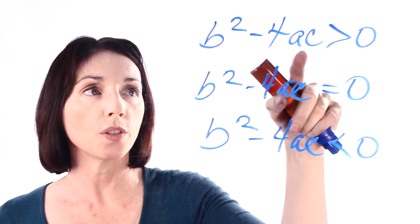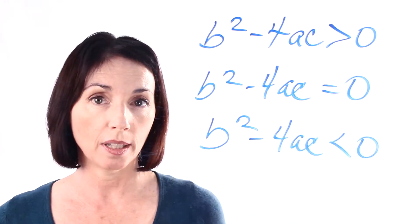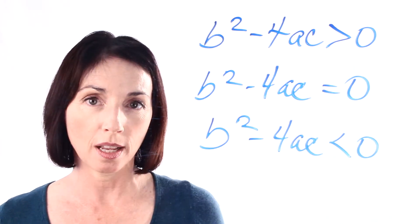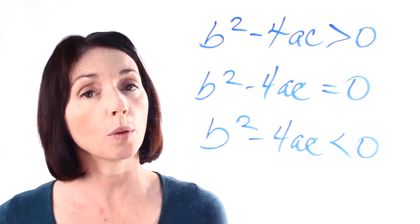If b squared minus 4ac is greater than zero, it means that your quadratic equation has two distinct real roots. That means two different real numbers that will solve the equation.